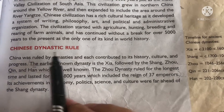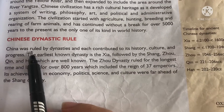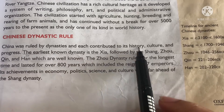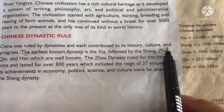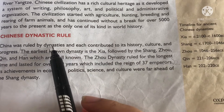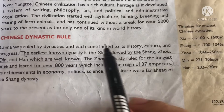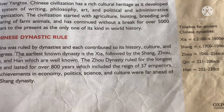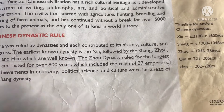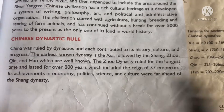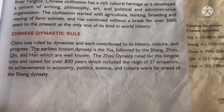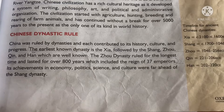Chinese Dynastic Rule: China was ruled by dynasties, and each contributed to its history, culture, and progress. A dynasty is basically a line of hereditary rulers of a country. So we can say that China was ruled by a lot of rulers, and each contributed to its history, culture, and progress.